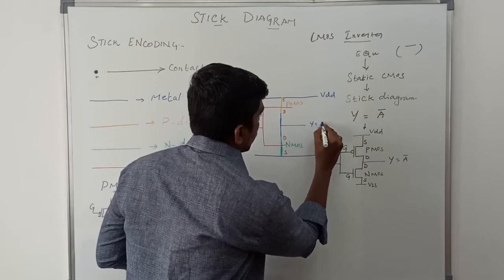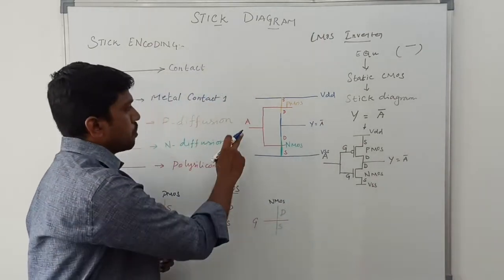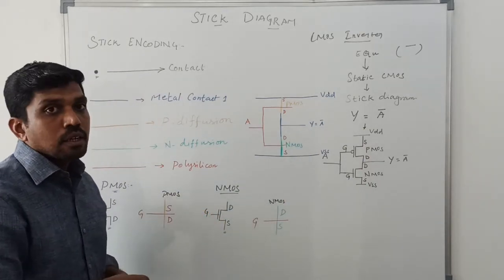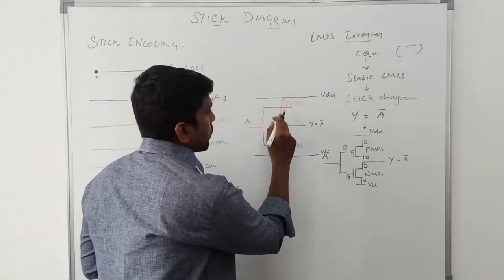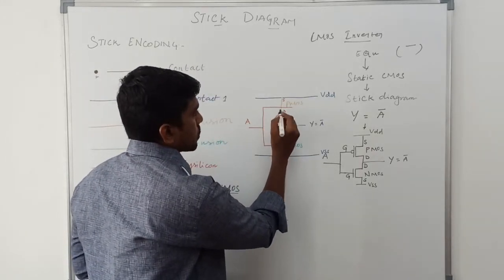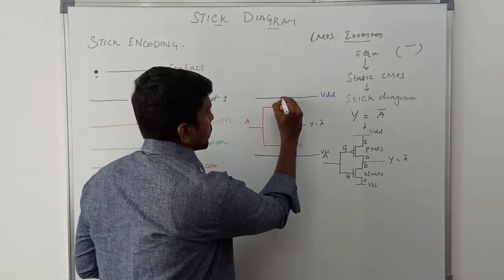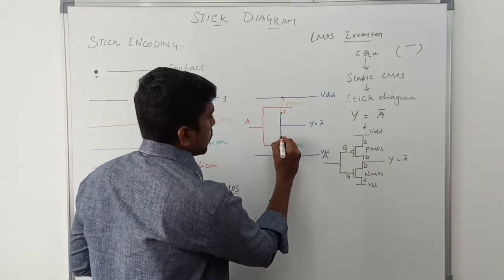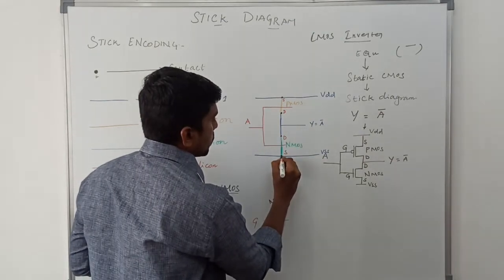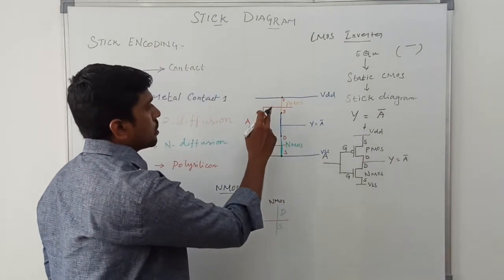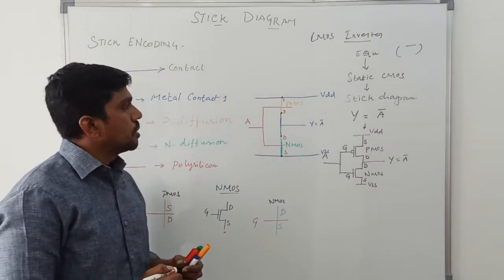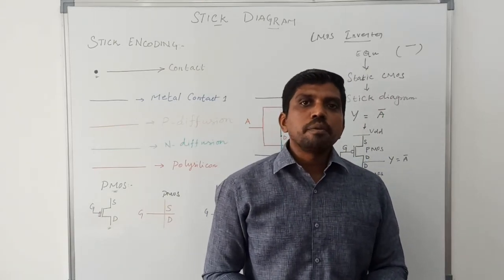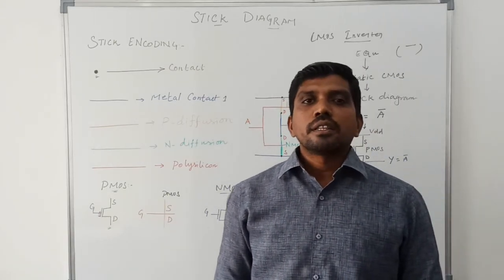Now take the output line — this is output Y equal to A-bar, so input is A and the output of the inverter is A-bar. Then mark the contacts where two different colors meet: yellow and blue, blue and green. These four contact dots represent the contact points. If you have not subscribed to my channel, kindly subscribe and support us to make more videos. Thanks for watching.